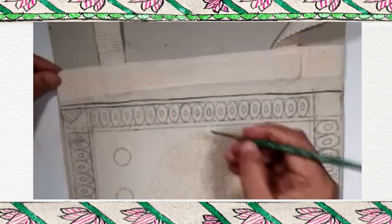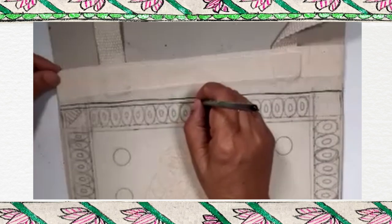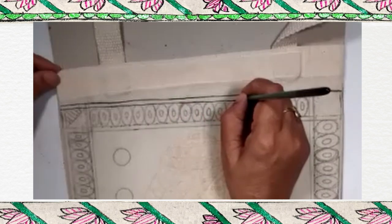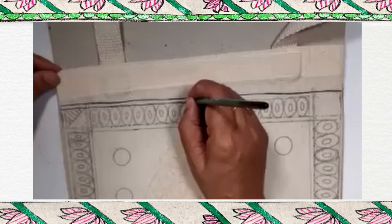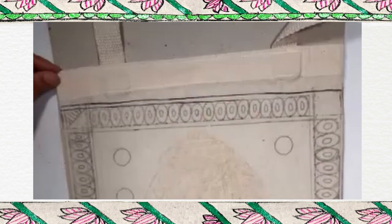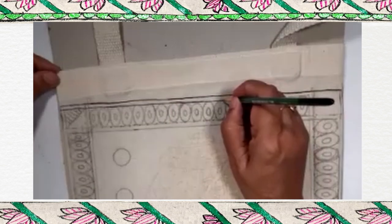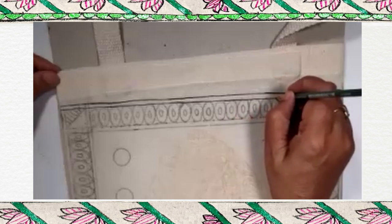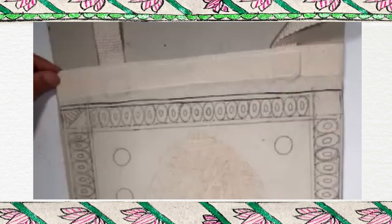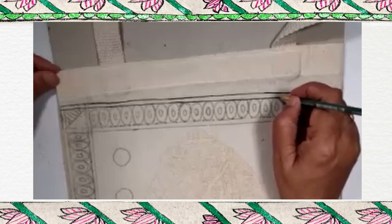In between these two lines, if we want, we can paint some design. We can do some kachni work, kachni means line work. We can do some bharni also, bharni means filling of colors. That's up to us. Or if we want, we can just leave it black.